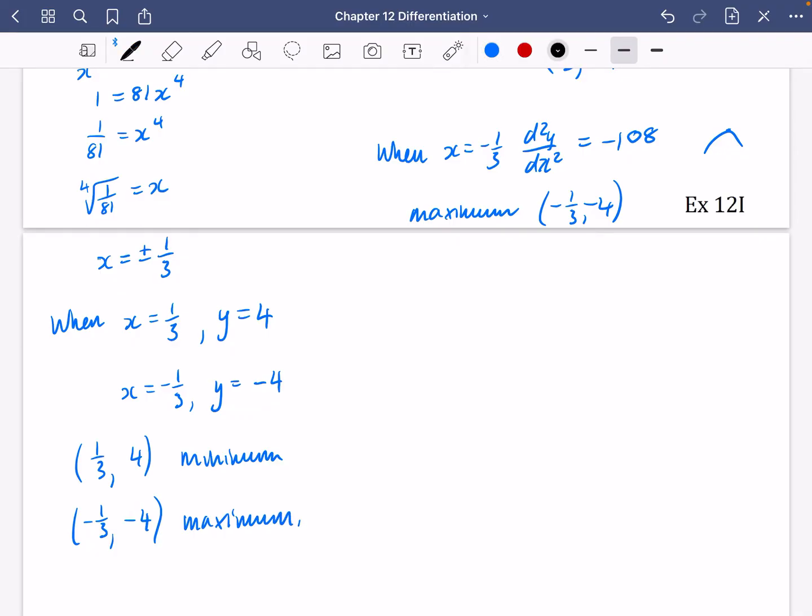So we get this is a maximum. So this one was a minimum, this one here is a maximum. I'm going to start sketching this graph, see if we can get an idea about what might be happening. So we've got a minimum point at a third, four. So this is a third, this is four. And I'm going to do a little bit here to remind me it's a minimum. And I've got a minus a third and minus four. I've got a maximum point. So it's going to be like this kind of shape.